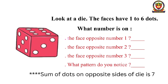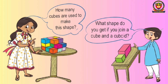Look at a die — the faces have one to six dots. What number is on the face opposite number one? The face opposite number two? The face opposite number three? Use the die to find the answers. What pattern do you notice? The sum of dots on opposite sides of a die is always seven.